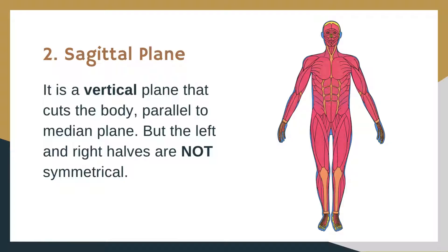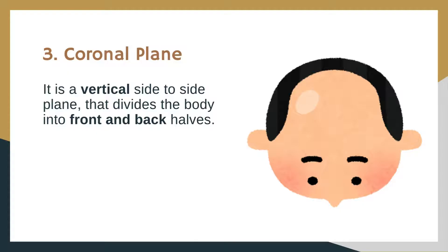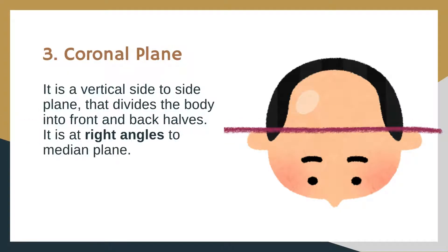Sagittal plane: it is a vertical plane that cuts the body parallel to the median plane, but the left and right halves are not symmetrical. Coronal plane: it is a vertical side-to-side plane that divides the body into front and back halves.